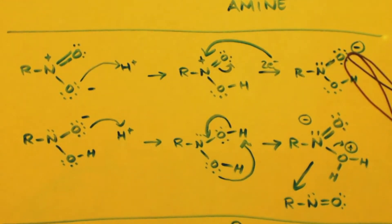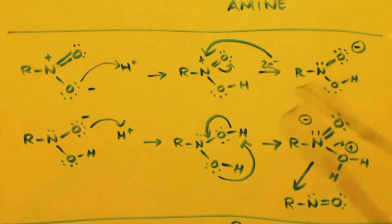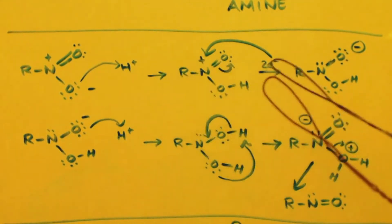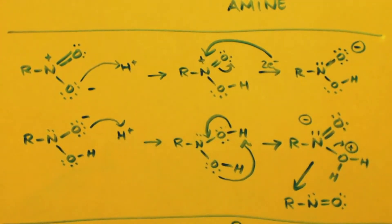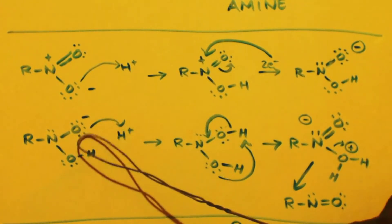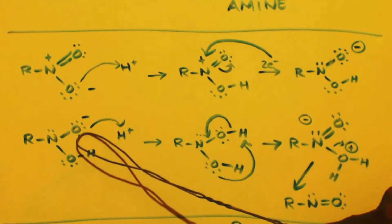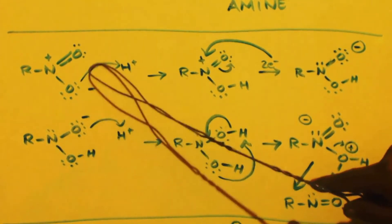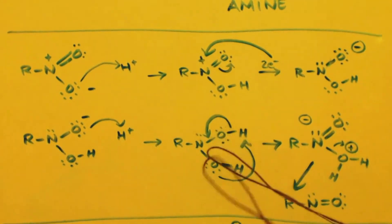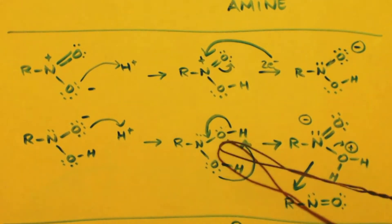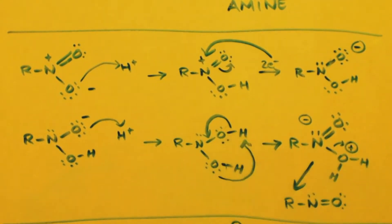Of course you have a negativity here. We already added our proton and our two electrons. So all we have left is to add a proton, added onto the negativity of the oxygen, just like we did in the first step. And we end up with the geminal diol on a nitrogen atom.